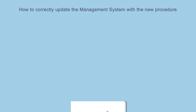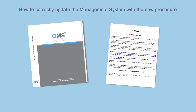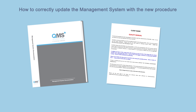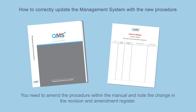Where the documented procedure has simply become outdated, you will need to rewrite the manual to reflect the new procedure. To do this, you will need to locate and amend the documented procedure within the documented management system manual. You must also update the revision and amendment register, which can be found at the front of the QMS manual.